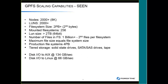In terms of what's been seen out there in customers: more than 2,000 nodes, more than 2,000 LUNs in a GPFS environment, and file systems as large as 2 petabytes. People are really pushing the limits of this. People have been using tiered storage with solid state and high-density drives and tape to take advantage of lifecycle management, and you're seeing disk I/O rates that make it very clear it's possible to drive GPFS pretty hard.